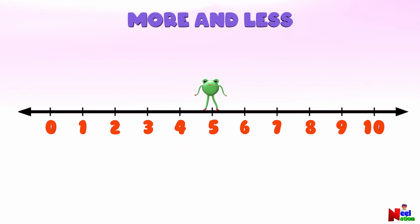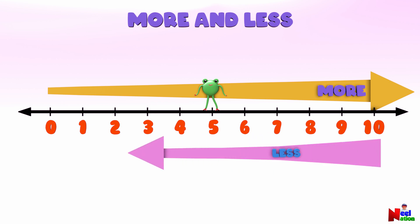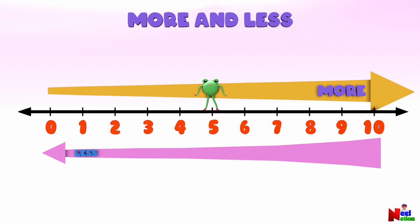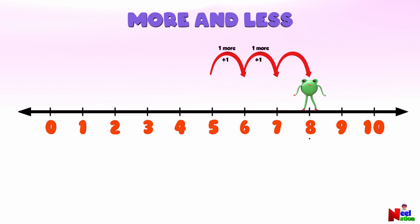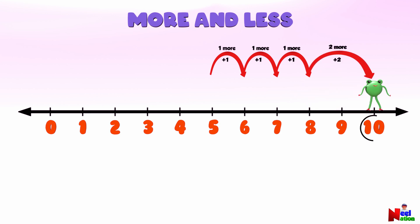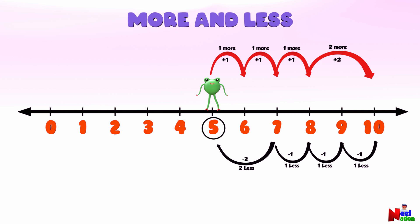Now let's look at more and less on a number line. As we have seen, when Mr. Luthu jumps to the right, the numbers keep getting bigger — it is more. And as Mr. Luthu jumps to the left, the numbers keep getting smaller — it is less. So when Mr. Luthu jumps one point to the right, it is one more. When he takes a giant leap two points to the right, that is two more. When Mr. Luthu jumps one point to the left, it is one less. A giant leap two points to the left is two less.